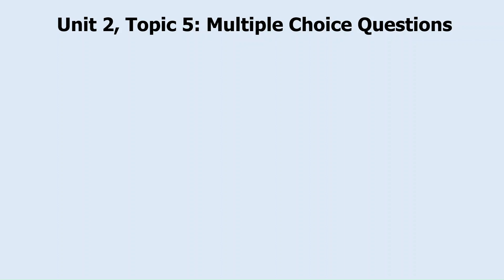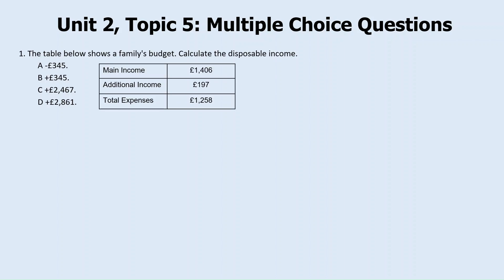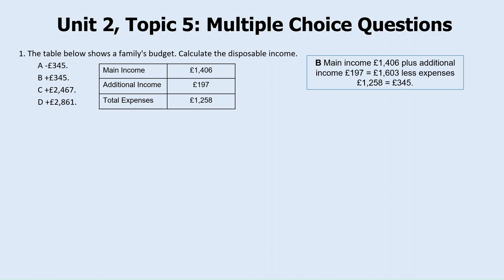To test our knowledge, here are three multiple choice questions. Question one: the table below shows a family's budget — calculate the disposable income for that family. They have main income of £1,406, additional income of £197, and total expenses of £1,258. The answer is B: plus £345. Main income plus additional income minus expenses equals £345 of disposable income.